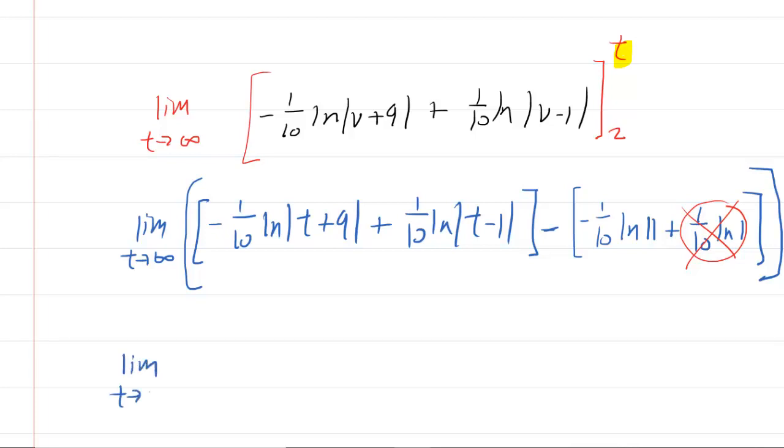The improper integrals that involve ln are a little bit tricky here. Because you might be tempted to just go ahead and plug infinity in. But if you did that, you'd have the ln of infinity plus the ln of infinity. You would think that that's equal to infinity. And then you might say that the integral was divergent in that case. But watch what happens if we factor out the negative 1/10. So that will leave us with the natural log of absolute value of t plus 9. And then this will give us minus the natural log of the absolute value of t minus 1.